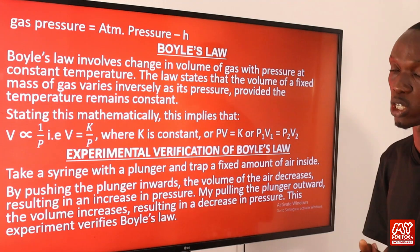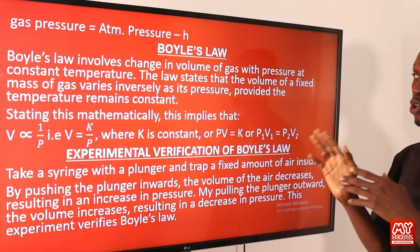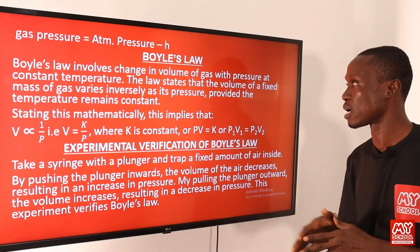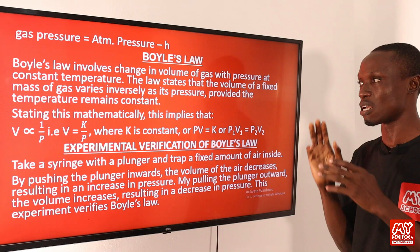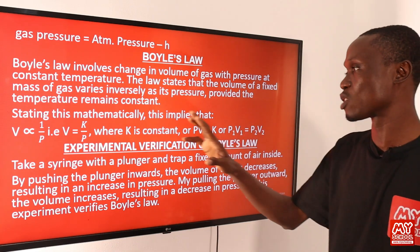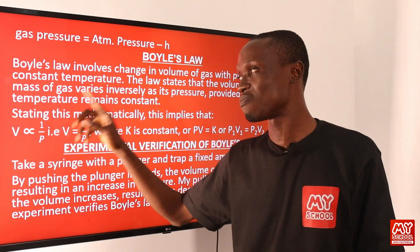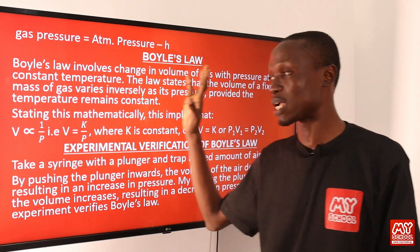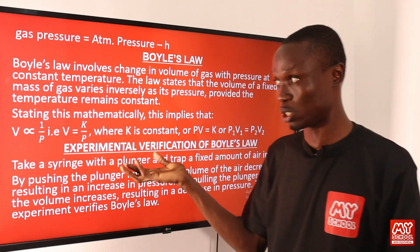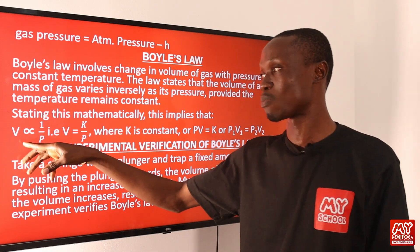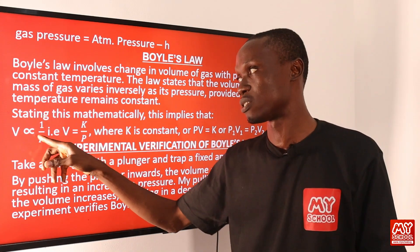Now let's begin with the gas laws properly. The first one is called Boyle's Law, which involves changing the volume of a gas with pressure at constant temperature. Boyle's Law states that the volume of a fixed mass of gas varies inversely as its pressure, provided the temperature remains constant. Mathematically, V varies inversely as P at constant temperature, showing an inverse relationship between the volume of a fixed mass of gas and its pressure.